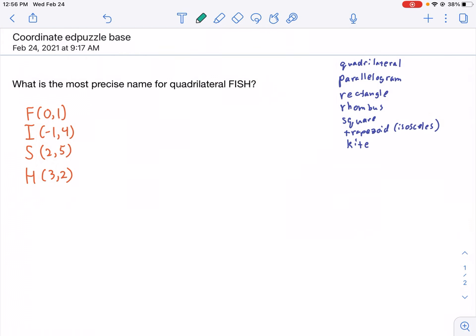The first thing we should do is use the distance formula on each of the sides. By using the distance formula on each side, we'll be able to see how many of the sides are equal to each other, if any.